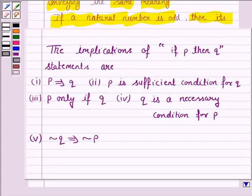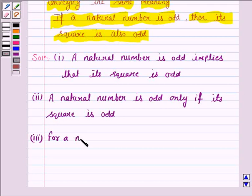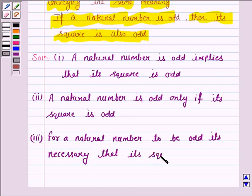The third way uses Q is necessary condition for P. So the third way is: for a natural number to be odd, it is necessary that its square is odd.